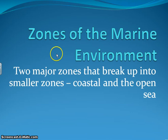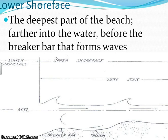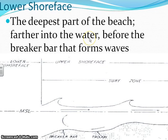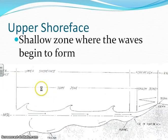Let's look at a couple of zones of the marine environment. We're going to look at the intertidal, or the beach zone first — the shallower places. This is one of those terms that might have been a little difficult to find in your vocabulary, so write it down if you haven't. The part before the breaker bar — the breaker bar is what forces the water up to start the formation of the waves you see at the beach — before that, where you don't see waves forming, that's what we call the lower shoreface.